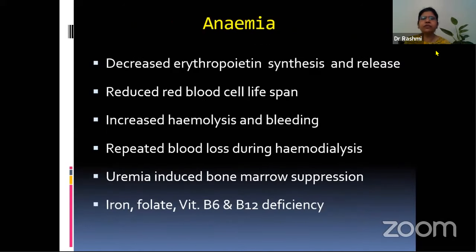The other problem we face is anemia, because these patients have decreased erythropoietin synthesis and release. There is reduced red blood cell lifespan, increased hemolysis and bleeding, repeated blood loss during hemodialysis, uremia-induced bone marrow suppression, and iron, folate, vitamin B6 and B12 deficiency. However, in recent times the problem of anemia has been mitigated because of the availability of recombinant erythropoietin.